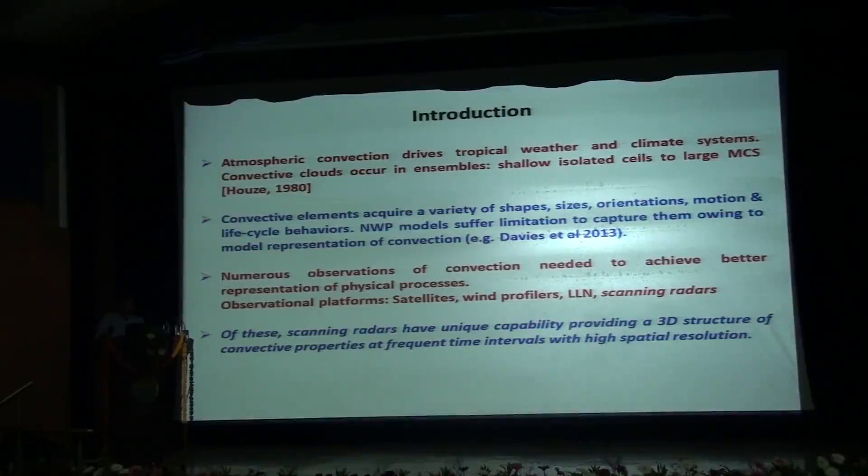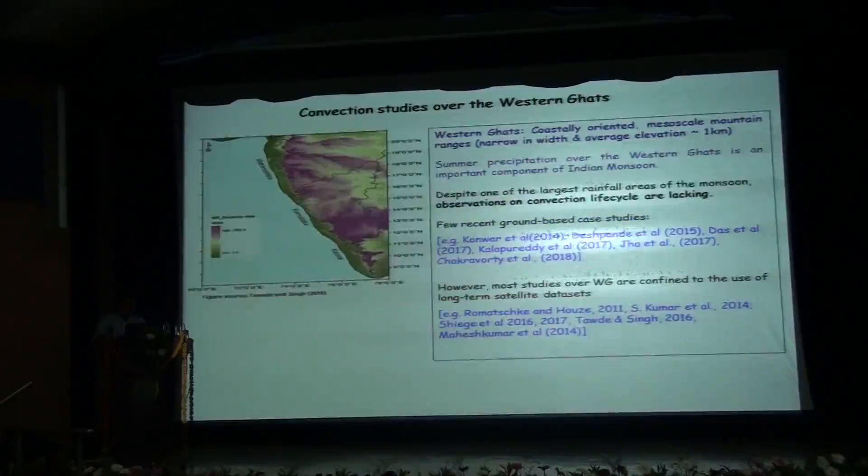There exist several observational platforms like satellites, wind profilers, lightning location networks and scanning radars. Of these, the scanning radars have a unique capability of providing three-dimensional structure of the convective properties of atmosphere at frequent intervals of time with high spatial resolution.